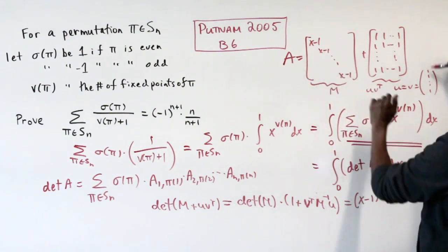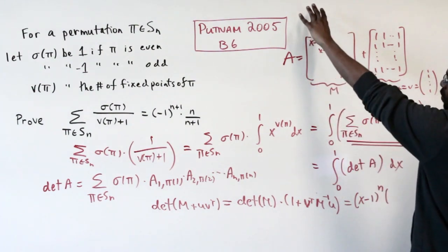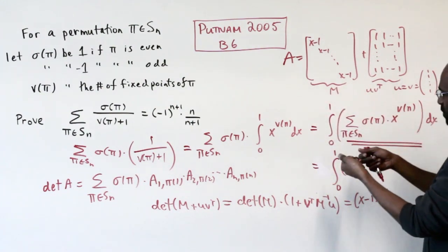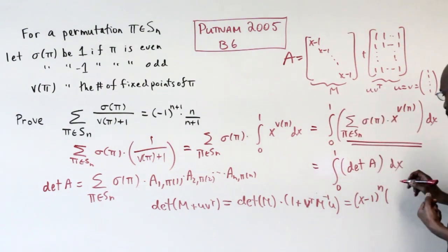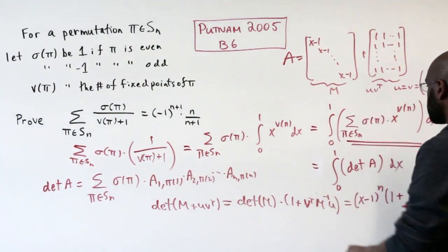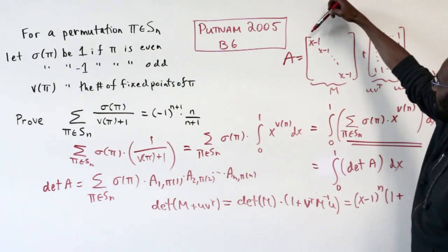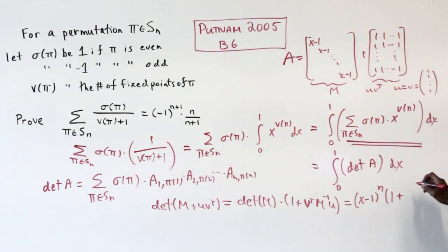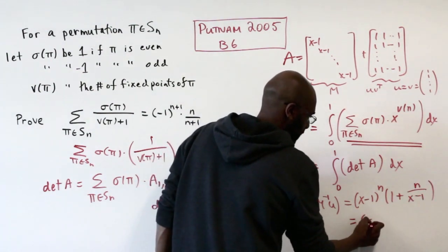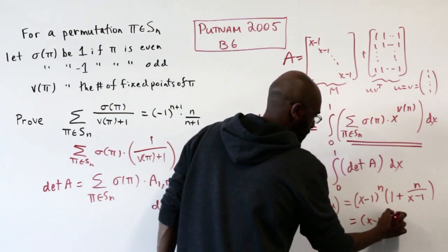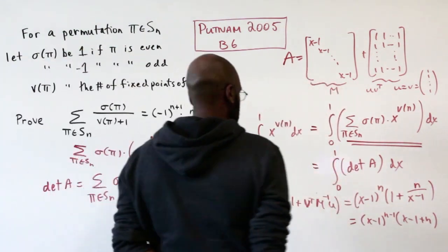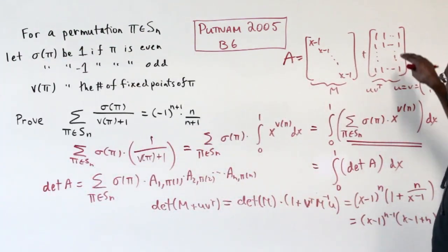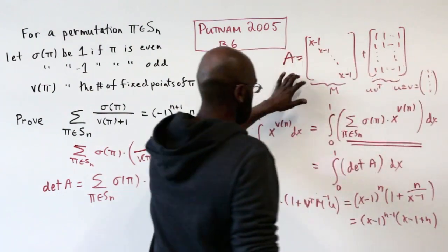When we multiply by u on the right and v^T on the left, the entries are all going to be 1 over (x-1), and we'll multiply on the left by a row vector of all 1's, so that's going to add up all those entries. We'll get 1 plus n over (x-1), so we can simplify to (x-1)^(n-1) times (x-1+n).